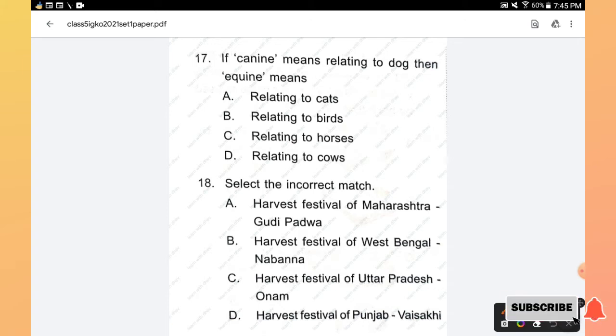Question number 18: Select the incorrect match. Harvest festival of Maharashtra is Gudi Padwa, harvest festival of West Bengal is Nabanna, harvest festival of Uttar Pradesh is Onam, harvest festival of Punjab is Vaisakhi. Which is incorrect here? Harvest festival of Uttar Pradesh is Onam is the incorrect match.